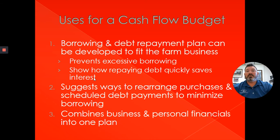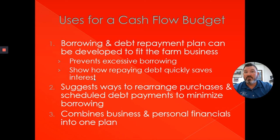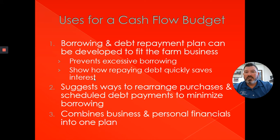When we talk about uses for cash in a cash flow budget, borrowing and debt payments need to take priority — you have to meet your obligations. You also need to know how to prevent excess borrowing; you don't want to borrow more money than you need, especially on an operating loan, so you're not paying interest on money you're not using. You can also show yourself how much you'd save by repaying a loan quicker than prescribed. A cash flow budget can suggest ways to rearrange purchases and schedule debt payments to minimize borrowing and reduce your interest requirement.